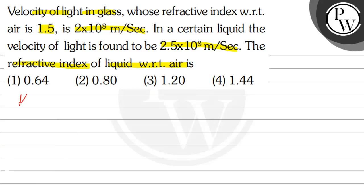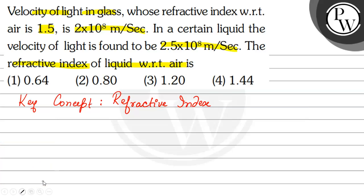So, first let us discuss the key concept. We will learn about the formula for refractive index. The formula for refractive index, which is denoted by mu, is equal to c by v, where c is the velocity of light in vacuum and v is the velocity of light in that medium. This implies that mu is proportional to 1 by v, because c is constant which is 3 into 10 to the power 8 meters per second.